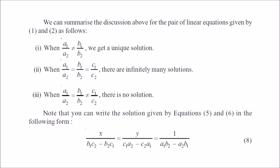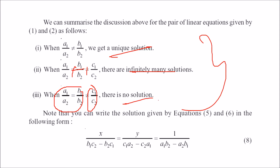To summarize: if a1/a2 is not equal to b1/b2, the two equations have a unique solution. If a1/a2 equals b1/b2 equals c1/c2, there are infinitely many solutions. If a1/a2 equals b1/b2 but they are not equal to c1/c2, there are no solutions. The cross multiplication formula gives: x/(b1·c2 minus b2·c1) equals y/(c1·a2 minus c2·a1) equals 1/(a1·b2 minus a2·b1).